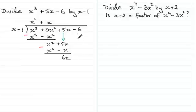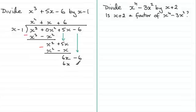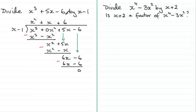Bring down the last term, minus 6. What do we need to multiply x by to get 6x? It's going to be plus 6. So 6 times x minus 1 gives us 6x minus 6. When we subtract we get 0 — so there is no remainder. We can see that x minus 1 is a factor of x cubed plus 5x minus 6 because it leaves us with no remainder.